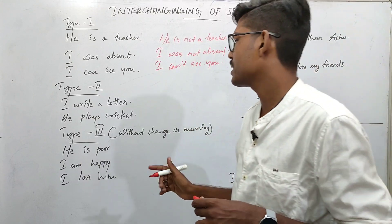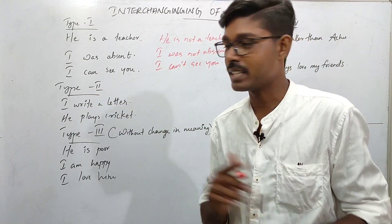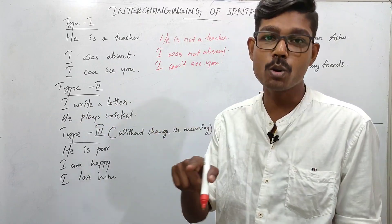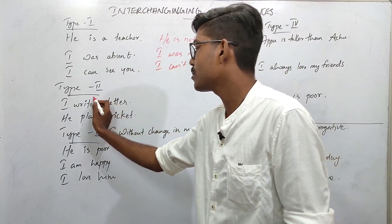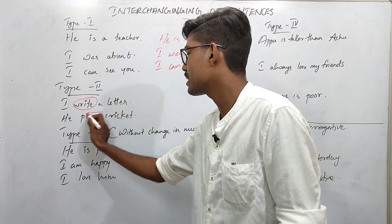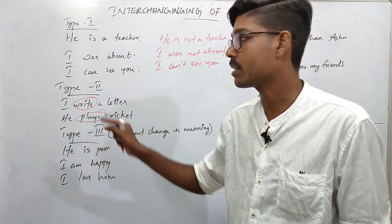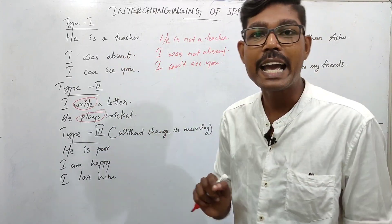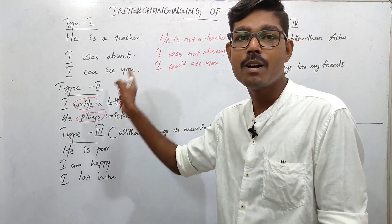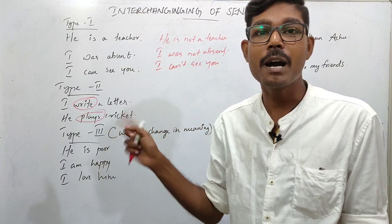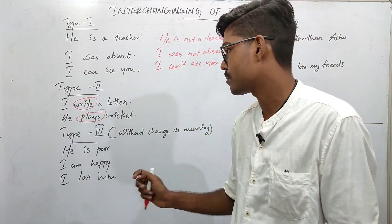Second type. Here, there is no auxiliary verb — only a main verb. So what do we do? We use the auxiliary verb. If there is no auxiliary verb, we introduce one. We will use the auxiliary verb.